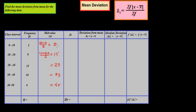Now we calculate fx: 5×5=25, 8×15=120, 15×25=375, 16×35=560, 6×45=270. The summation of fx is 1350. The summation of f is 5+8+15+16+6 = 50.